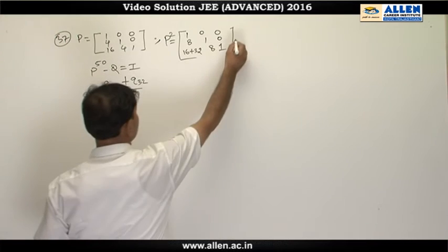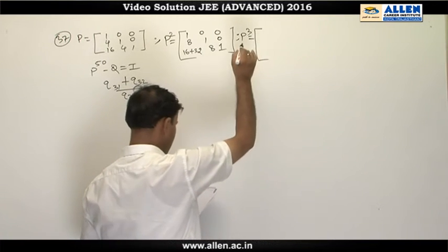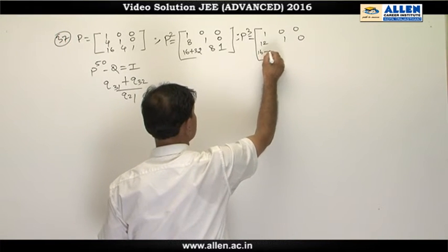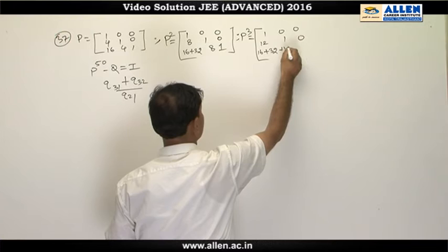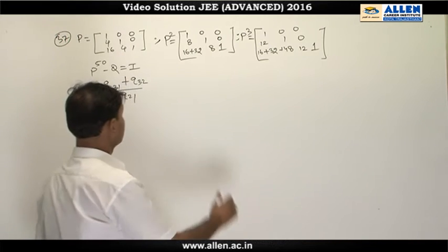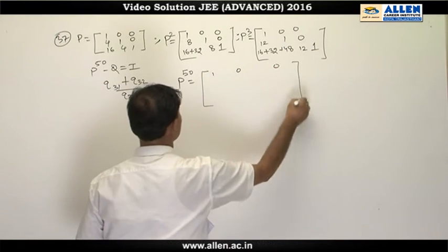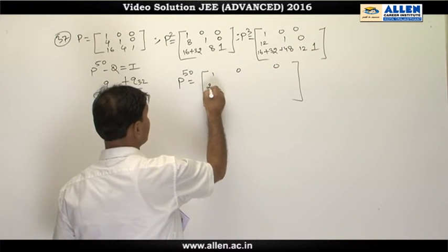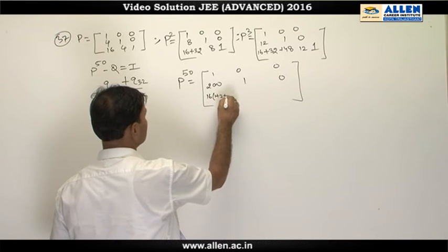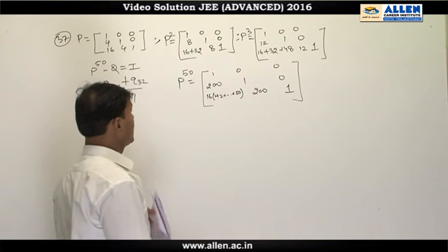After P squared, finding matrix P cubed gives elements 1, 0, 0; 12, 1, 0; and 16 + 32 + 48, 12, 1. From this symmetry, we can see that P to the power 50 will be 1, 0, 0; 200, 1, 0; and the (3,1) element will be 16 times the sum of the first 50 natural numbers, then 200, and 1.